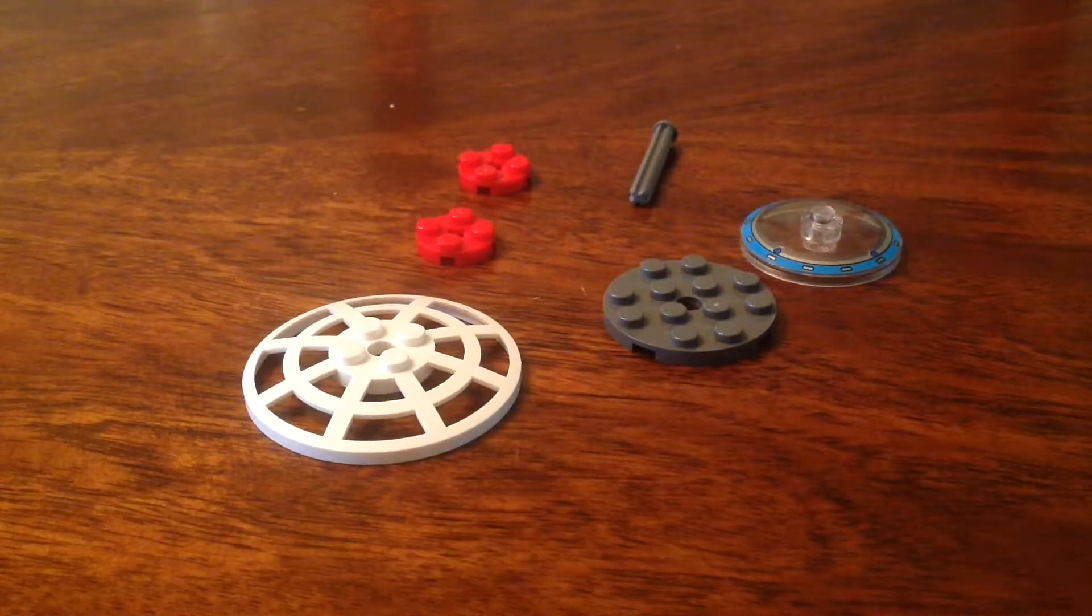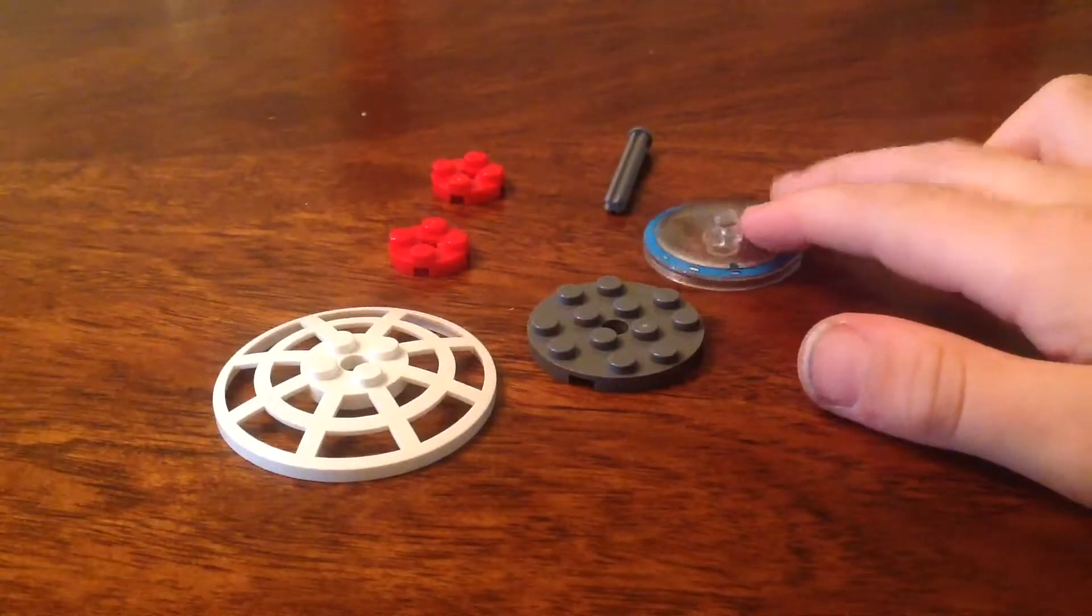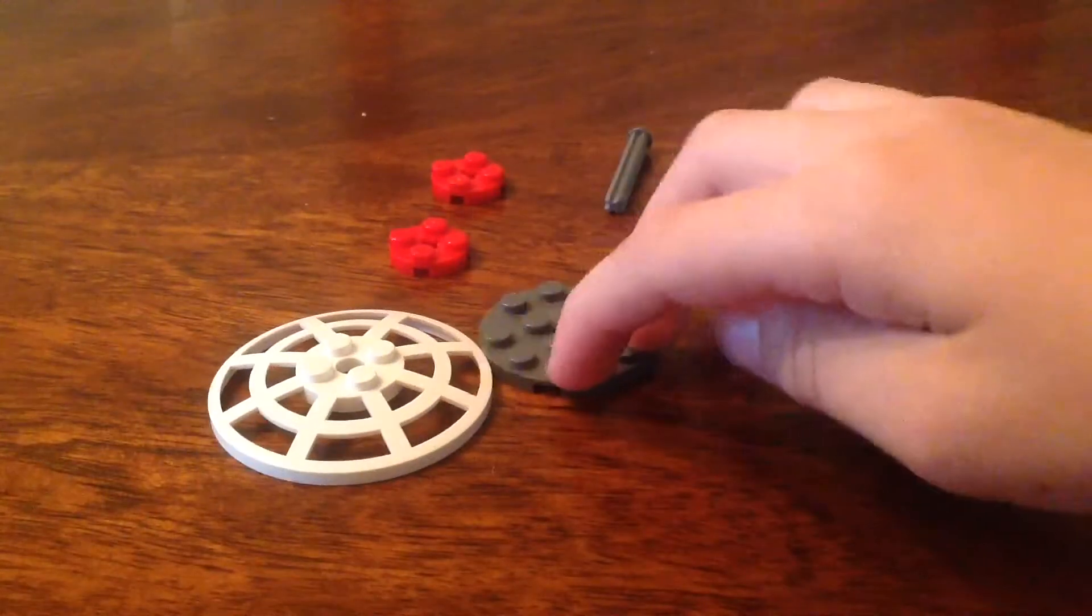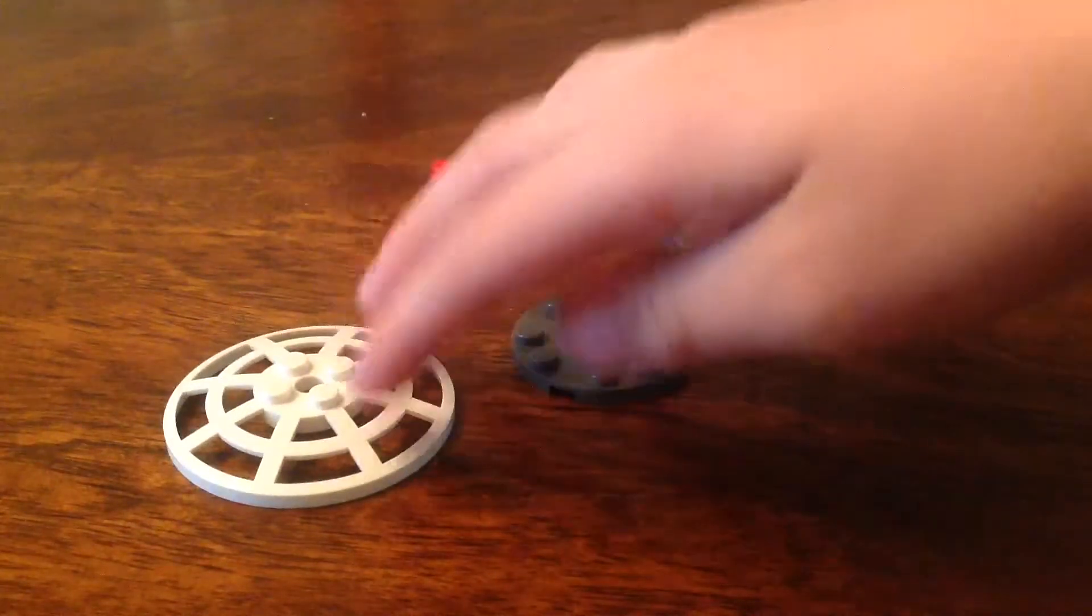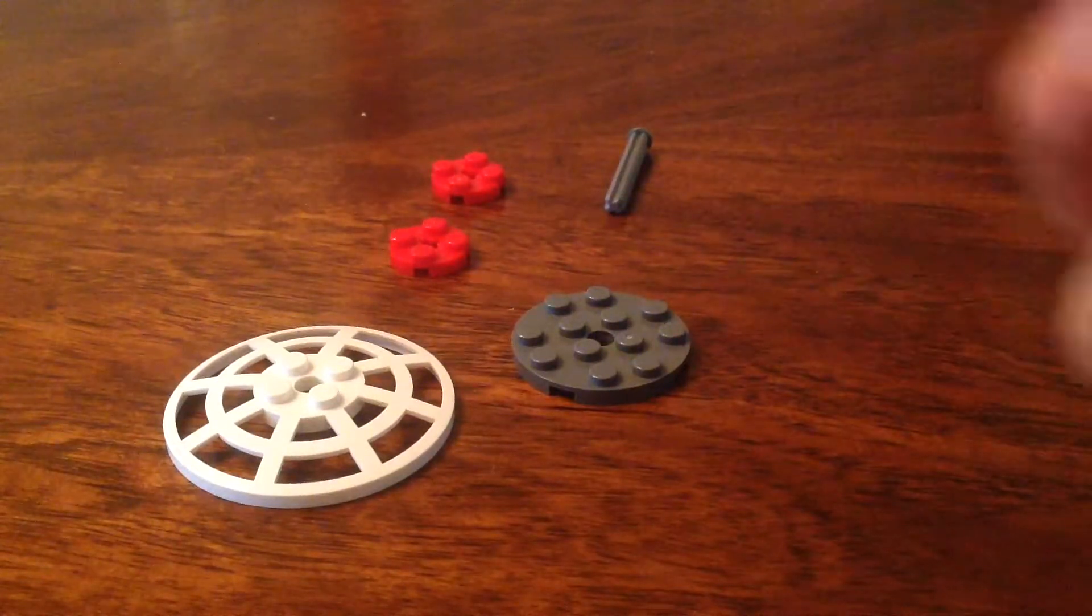So right now you just need these pieces: one of these circle pieces right here, and then another circle, and then another circle like this, just bigger than those two. You need this one because of the bottom, like that.